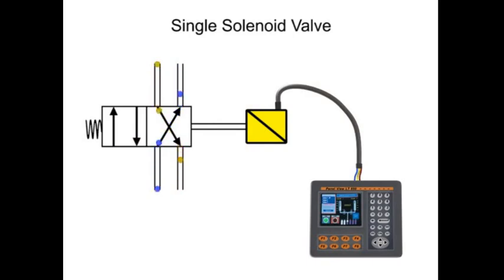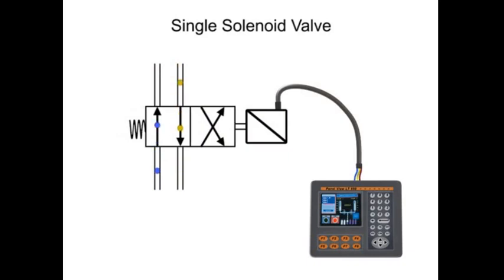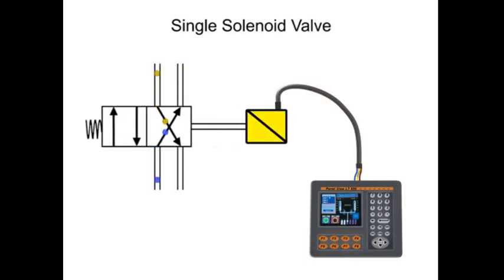Once the electrical current is removed and the solenoid is de-energized, the valve returns to its normal position by spring force. Fluid circuits designed to use single solenoid valves must maintain electrical current in order to keep the valve in its shifted position.